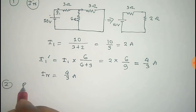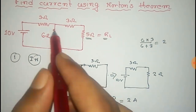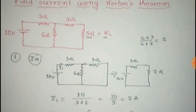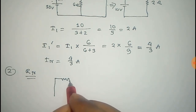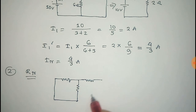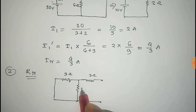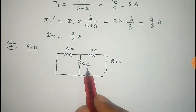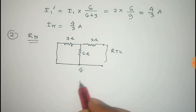The second step is to find the Norton resistance, which is the same as the Thevenin resistance. For this, we have to short the voltage source and remove the load resistor. Just short the source and leave the other components as usual, and remove the load. The resistance across the terminal is called the Thevenin or Norton resistance. Here, the 3 ohm and 6 ohm are in parallel connection.